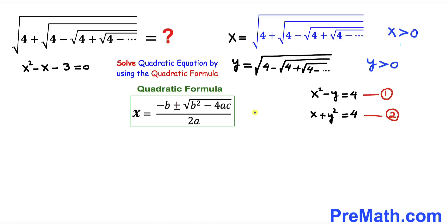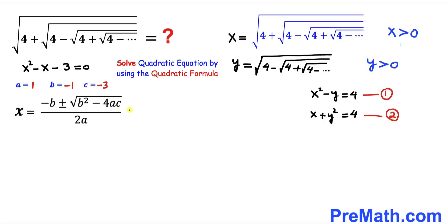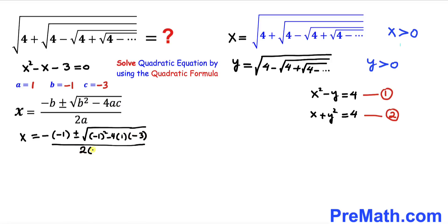This is a quadratic equation, which we'll solve using the quadratic formula. Our coefficients are a equals 1, b equals negative 1, and c equals negative 3. Filling in the formula: x equals minus negative 1 plus or minus the square root of (negative 1) squared minus 4 times 1 times negative 3, all over 2 times 1. Simplifying gives x equals 1 plus or minus the square root of 13, all over 2.